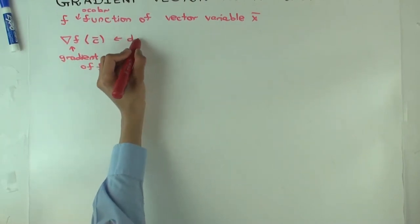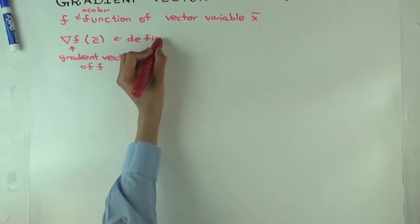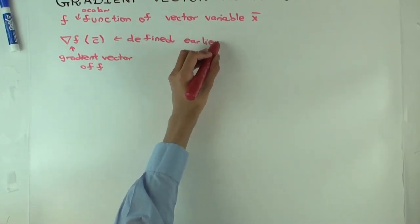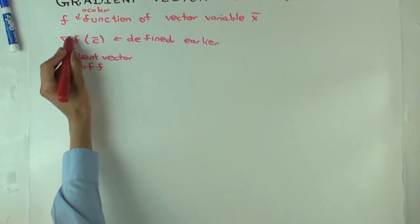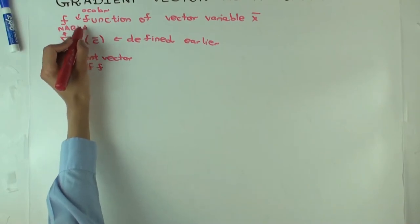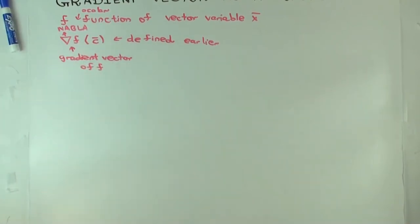This was defined earlier. What's that symbol called, the one here? Nabla. But this is usually read as grad f.